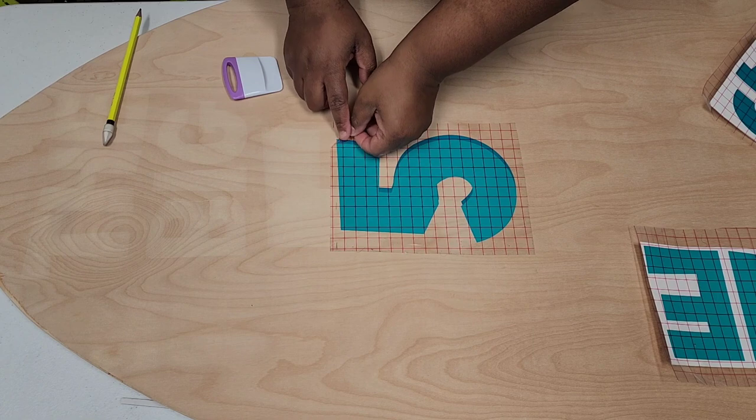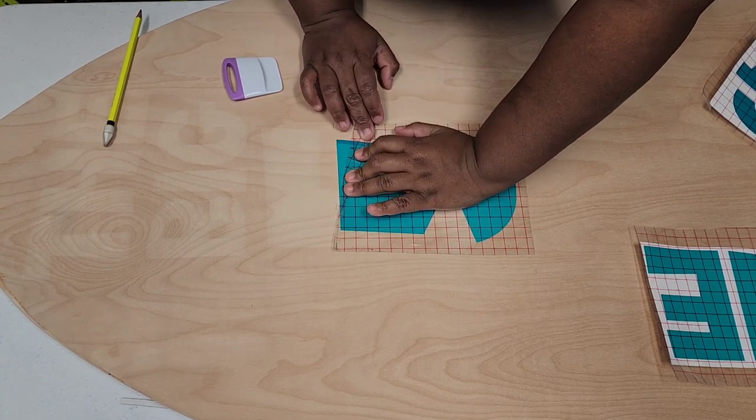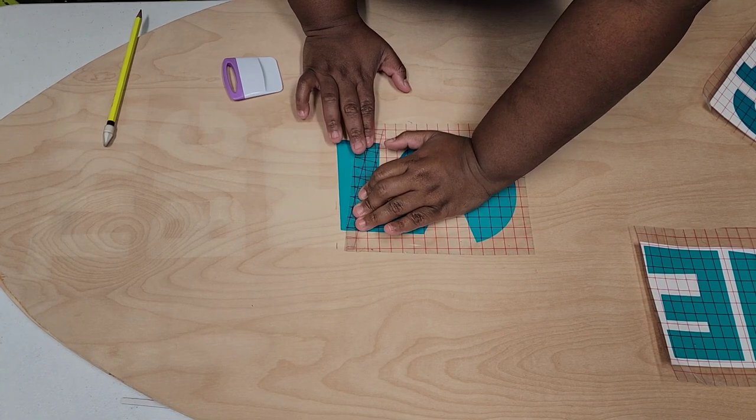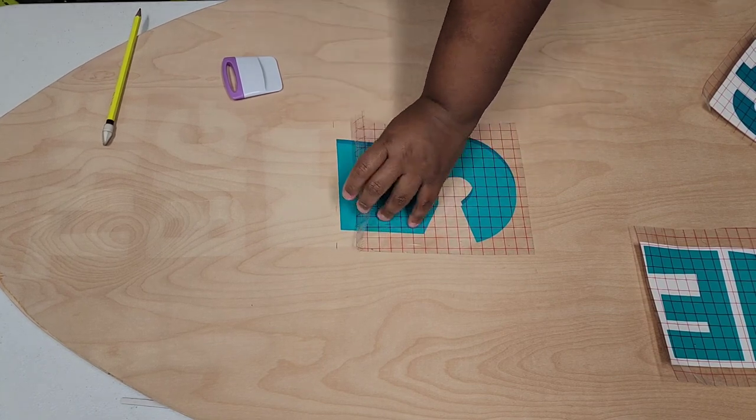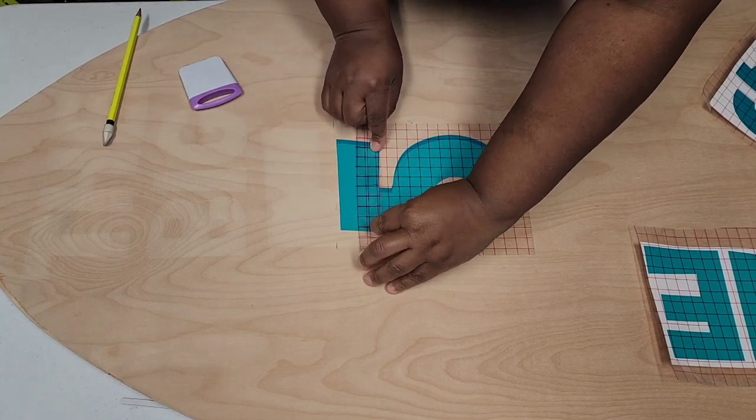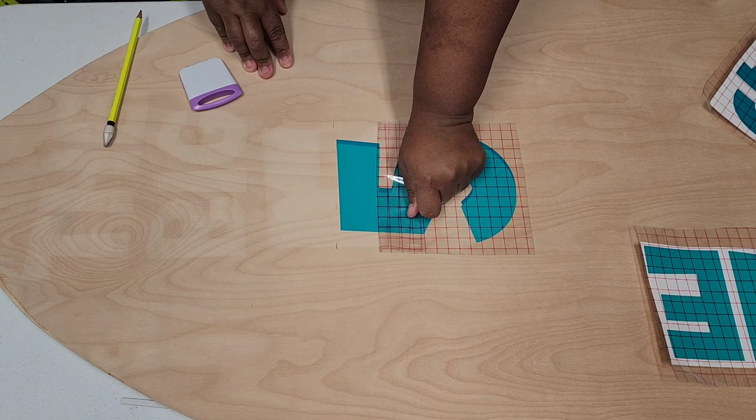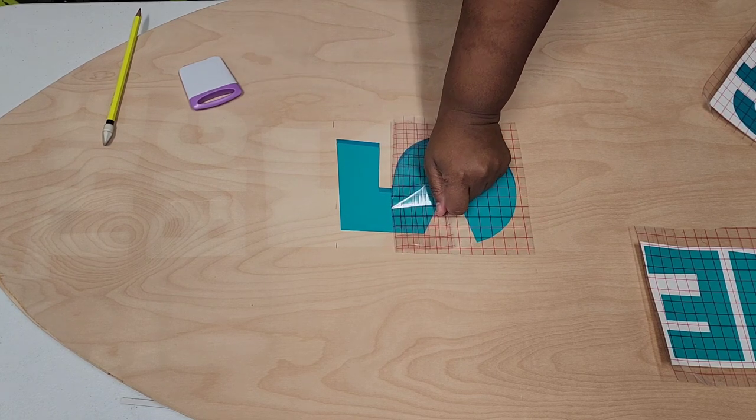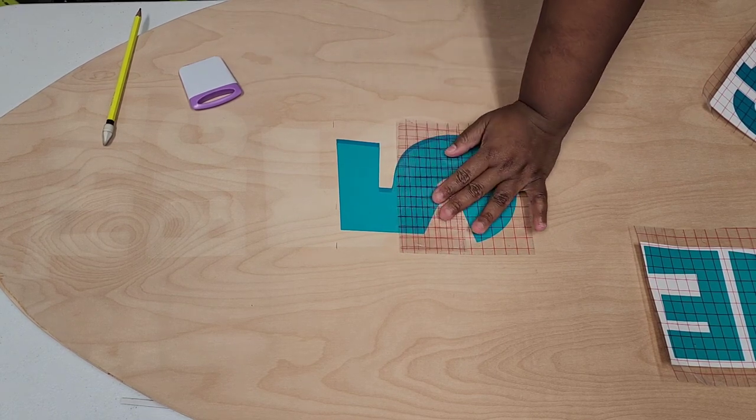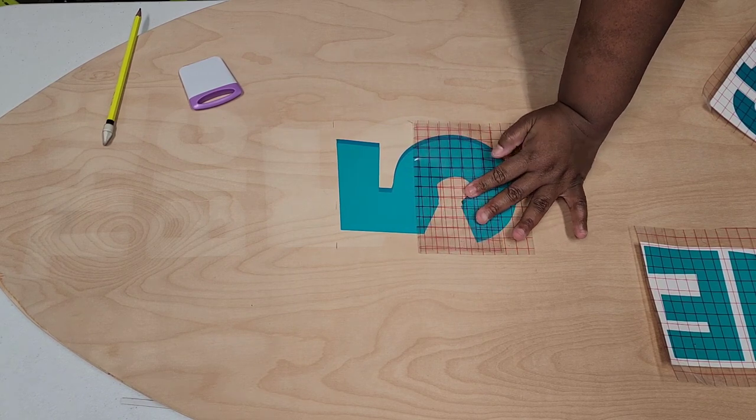And I would recommend when you do peel the transfer tape off that you peel from one direction and just continue in that same direction. Because when you start peeling it in different directions, you don't want the vinyl to start to stretch out or start to bubble up and come off your surface in the middle.